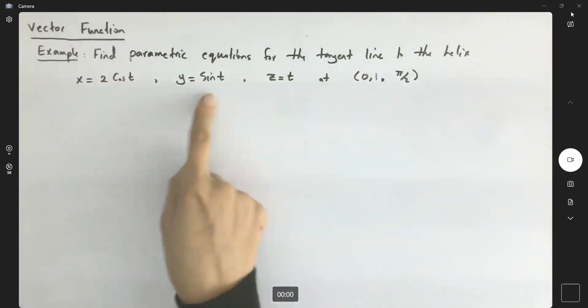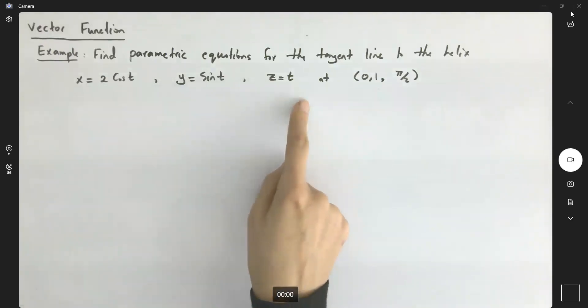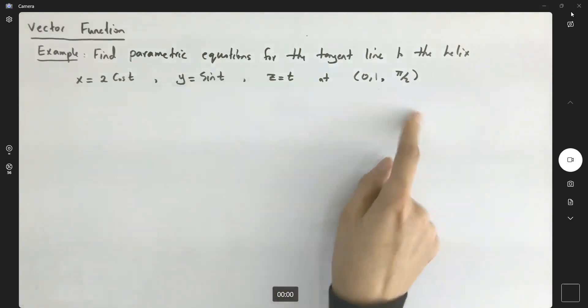x is 2 cosine t, y is sine t, and z is equal to t at the point (0, 1, π/2). Very good.